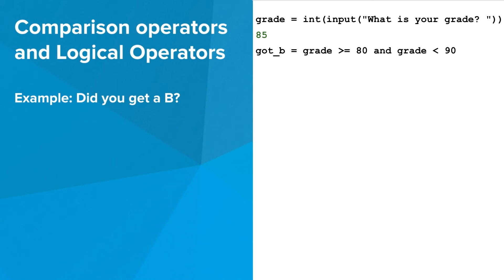Notice how we need to use the variable grade in both comparisons. We can't just say that a grade is between 80 and 90. We need to say that grade is greater than or equal to 80 and grade is less than 90. Finally, we can print out the results.